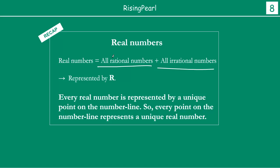If we combine the collection of all rational numbers and all irrational numbers together, we get what we call real numbers, expressed by uppercase letter R. So friends, this is a quick recap. In the next video, we are going to take a look at Euclid's division lemma.